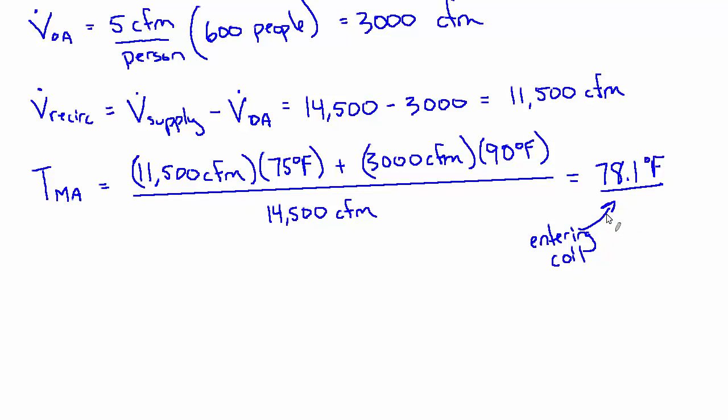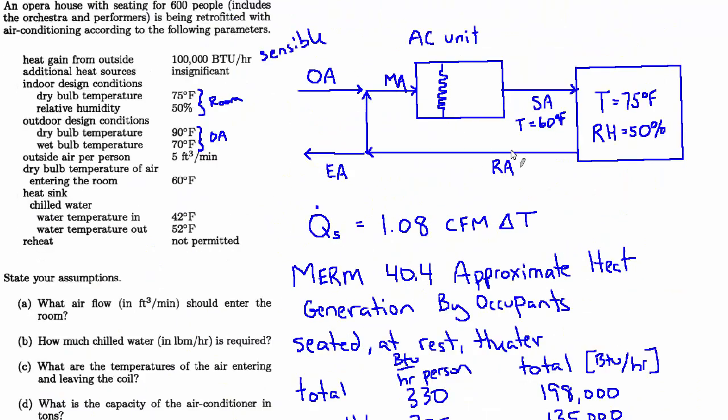And then the other question they asked was about the leaving coil temperature. And that's an interesting question because if you look at our simplified drawing up here, you're seeing that the supply air temperature is 60 degrees.